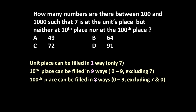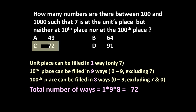The hundred place can be filled in eight ways. From 0 to 9, total ten digits are available: 0, 1, 2, 3, 4, 5, 6, 7, 8, 9. But 7 cannot be there at the hundred place, and 0 also cannot be there — if 0 occupies this position it becomes a two-digit number, less than 100. Since it must be a three-digit number between 100 and 1000, 0 is excluded too. So the hundred place can be filled in eight ways. Total number of ways = 1 × 9 × 8 = 72.